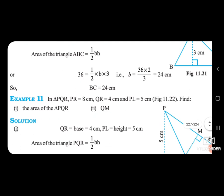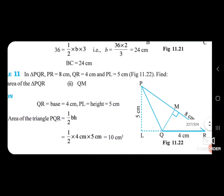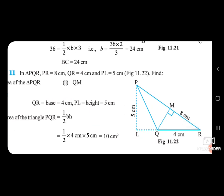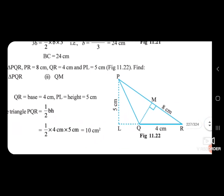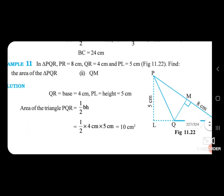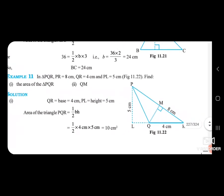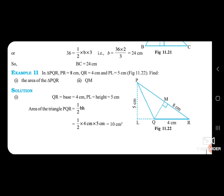Example 11: In triangle PQR, PR = 8 cm, QR = 4 cm, PL = 5 cm. Find the area of triangle PQR and QM. Taking QR as base = 4 cm and PL as height = 5 cm. Area of triangle PQR = 1/2 × 4 × 5 = 10 cm square.